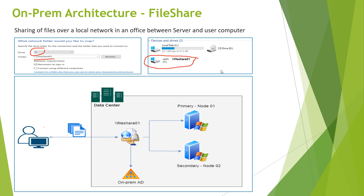So what does a typical on-prem architecture look like? You have the user with his laptop who can either read or write files to the file share mounted on his laptop. Every time he tries to access the application, he is authenticated using the on-prem Active Directory. The file share is hosted on Windows Server — typically you have two nodes, Node 1 and Node 2, providing failover capability. Every time Node 1 fails, it automatically switches over to Node 2.